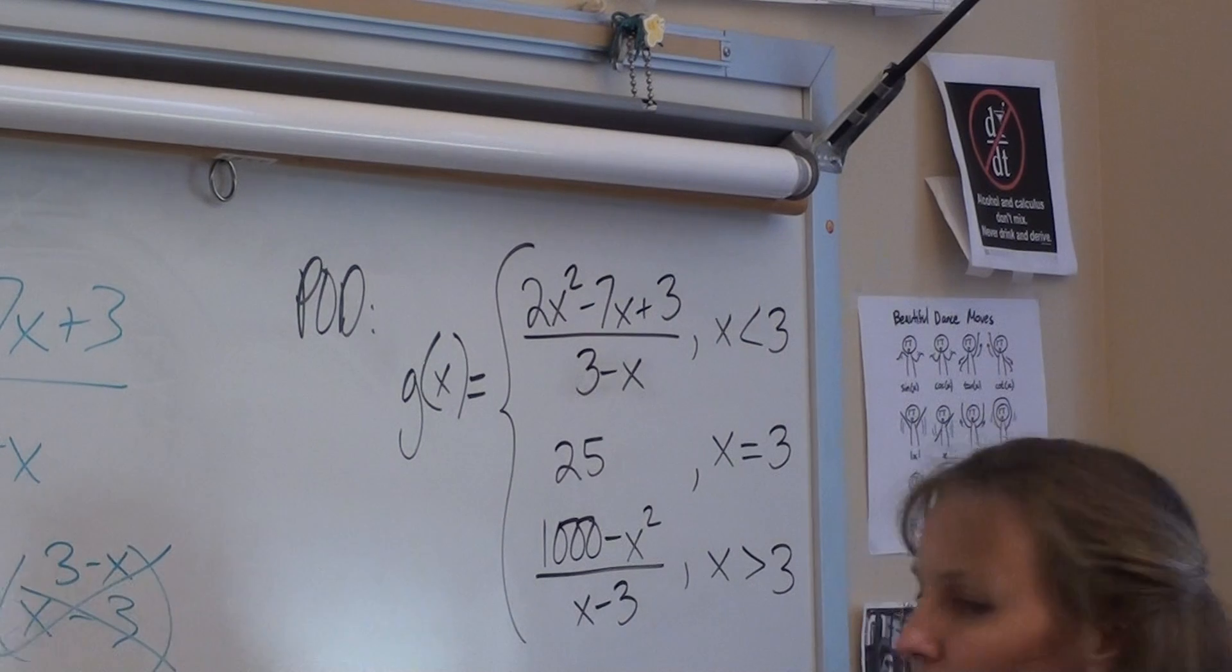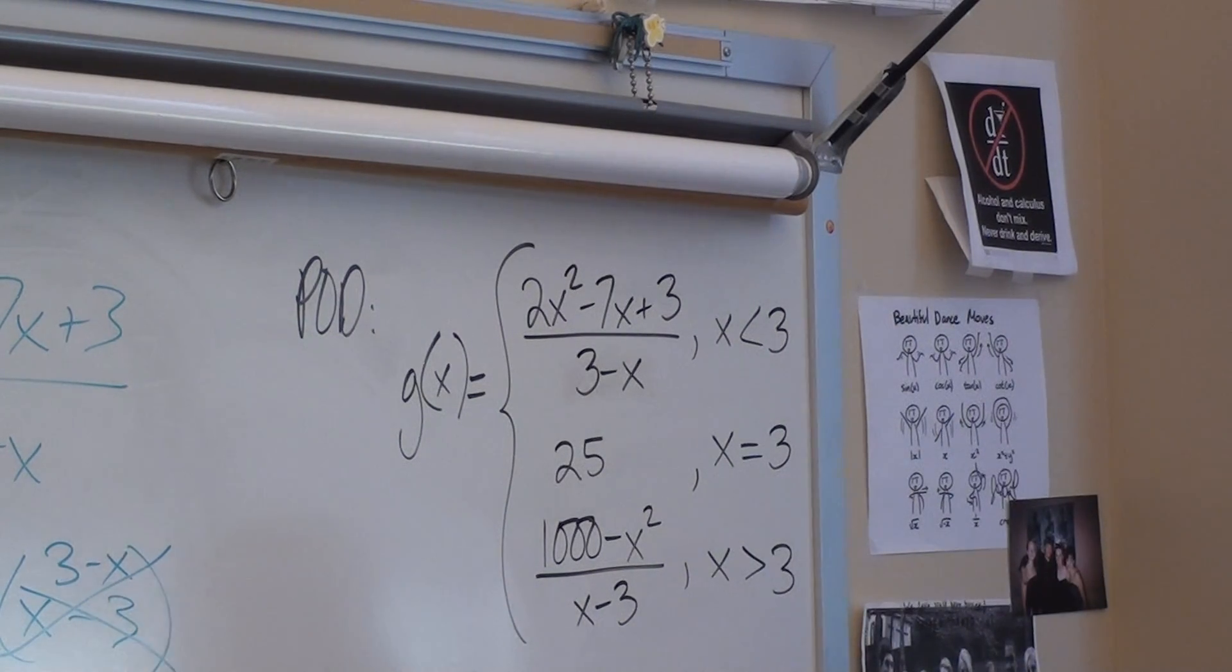So for the limit as x approaches 3 from the right, when we plug in a 3 just to check it, we get something that is not 0 over 0. As soon as you get not 0 over 0, you have a vertical asymptote.